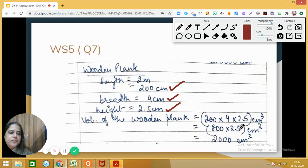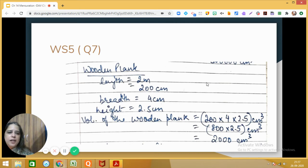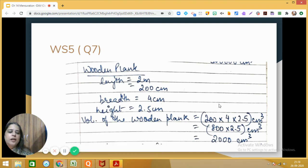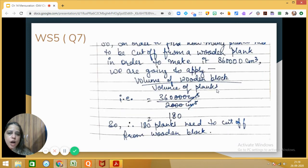It gives us 2000 cubic centimeters, right. Now the purpose of finding the volumes of the block and this wooden plank is we need to find out how many wooden planks can be cut off from the given wooden block. So how are we going to do this? The number of wooden planks which we can cut will be equal to the volume of the wooden block—that is the total volume which you have calculated—divided by the volume of the plank.